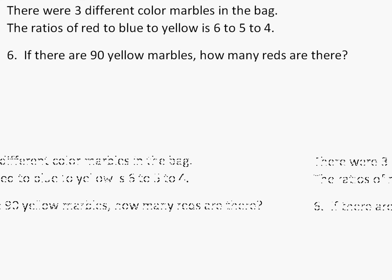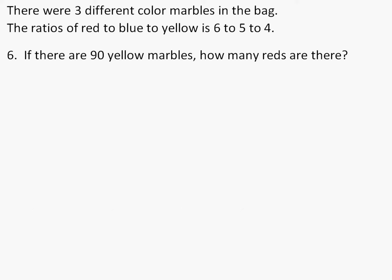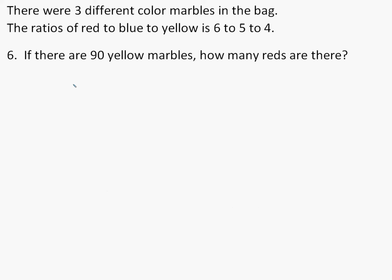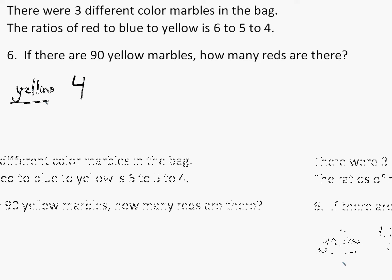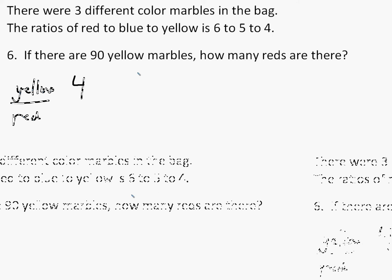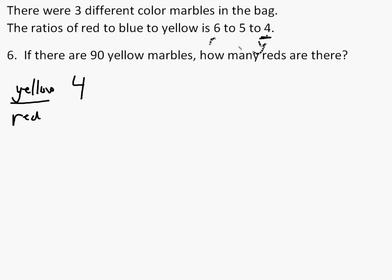And now we have this actual question. There are 90 yellow marbles. How many reds are there? So we want to take the ratio of yellow to red. So yellow is 4. So we're thinking we have the yellows compared to the reds. And so that's the ratio we're going to be looking at. So we see that's 4. That's our yellows to red, which is 6. So 4 to 6.